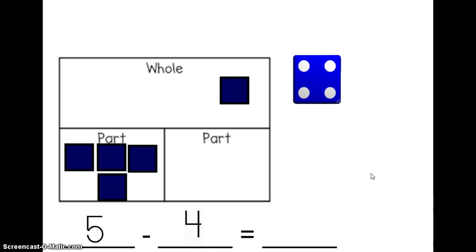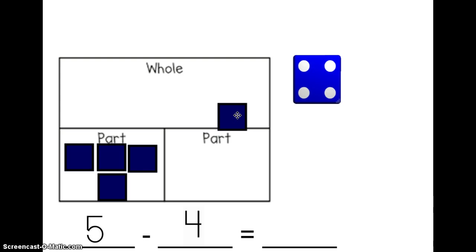I started with five as my whole. I took four away and now I need to find out my answer. Five minus four equals what? Well, I have one cube left in my whole that I can drag into my other part. So five minus four equals one.